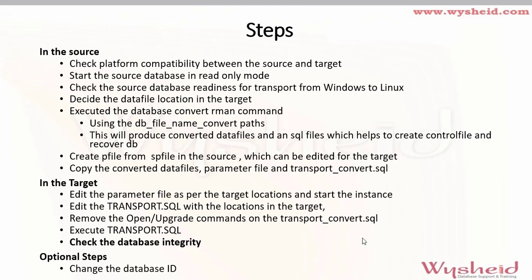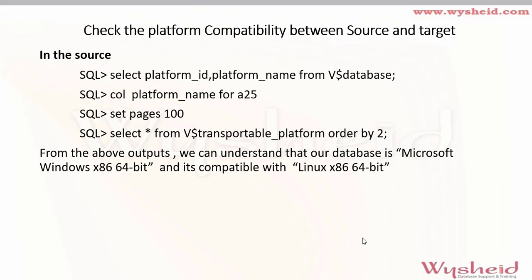We'll start up the database in no-mount stage, then edit the transport SQL created by the RMAN convert command to specify changes for the target location — changing the data file paths, database name if required, and online redo log file paths. Running transport_convert.sql will create the control file, open the database in resetlogs mode, and create the temporary file. After conversion we cross verify for invalid objects and can run utl_rp to recompile them. Optionally, we can rename the database using the NID utility.